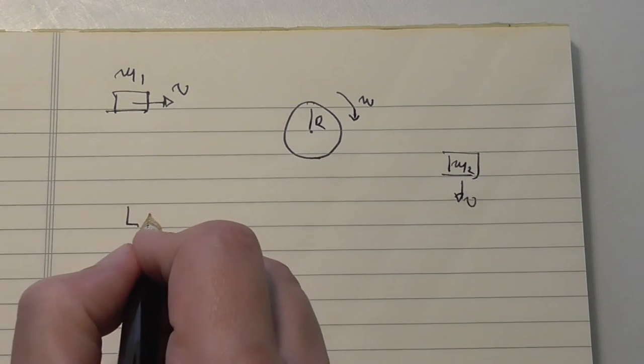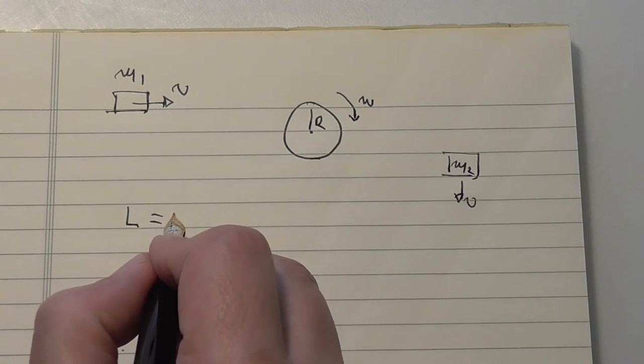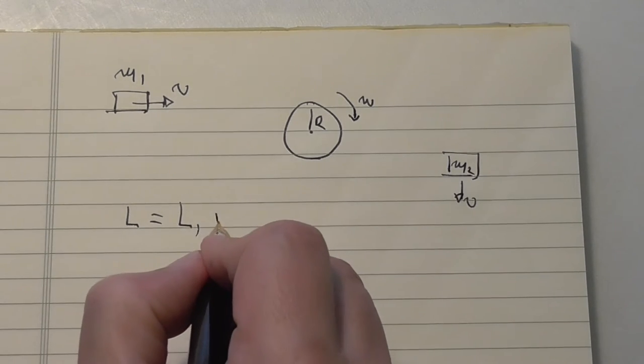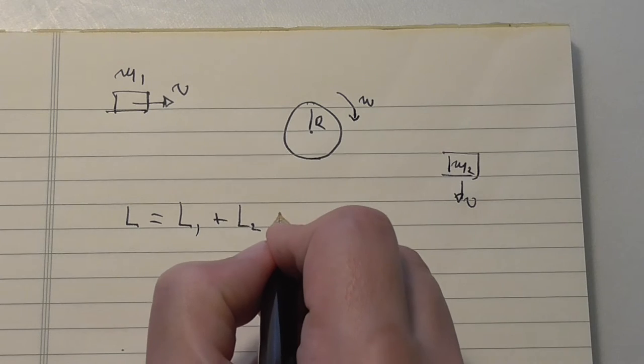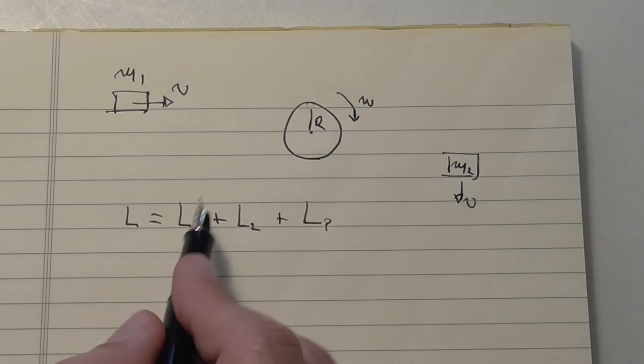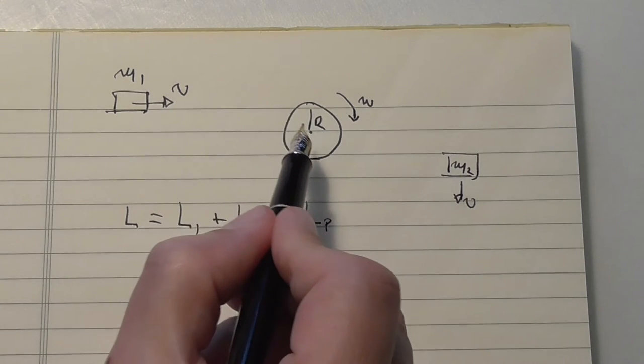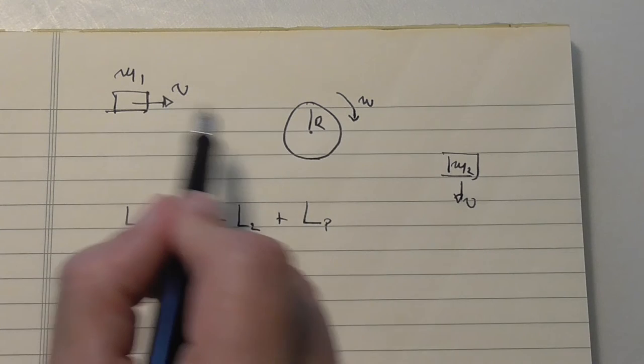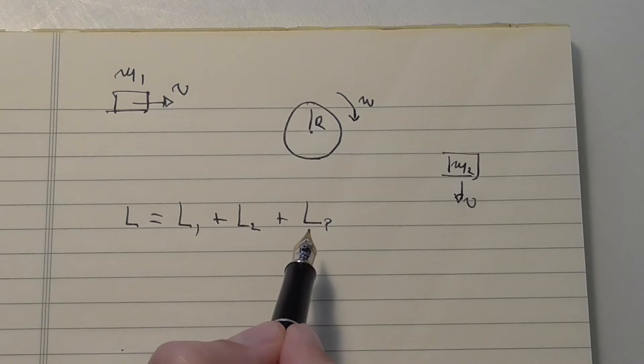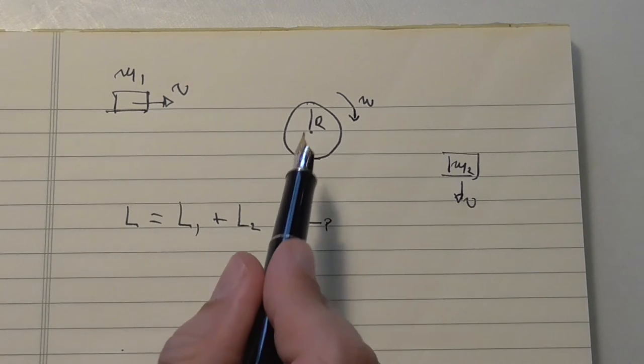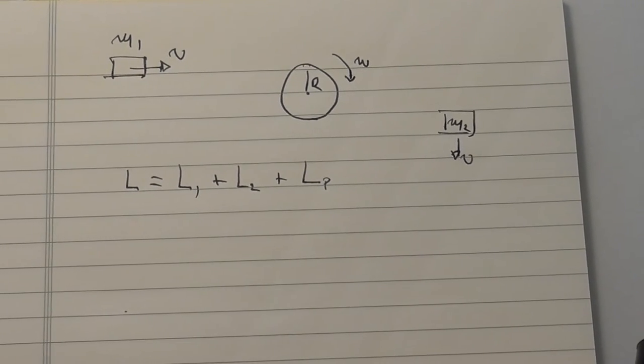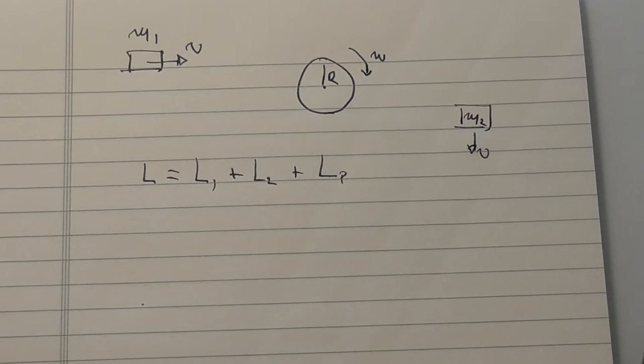The total angular momentum would be equal to the angular momentum of 1 plus the angular momentum of 2 plus the angular momentum of the pulley, the disc. And this now becomes an algebraic sum because the axis of rotation is the same, it's common for all masses. This is actually a vector sum, but now it becomes an algebraic sum because of the common axis of rotation. We have vectors in the same direction, and this simplifies things.